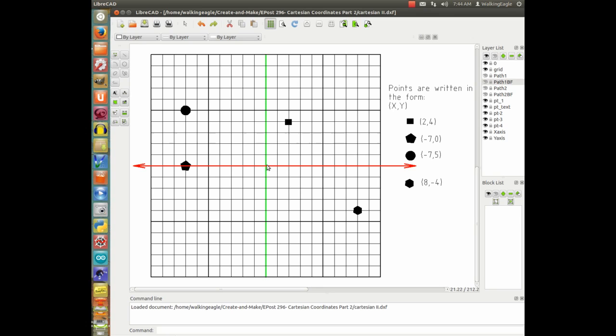We're wanting to tell somebody how to get here to point one. We would say go east two blocks, north four blocks.